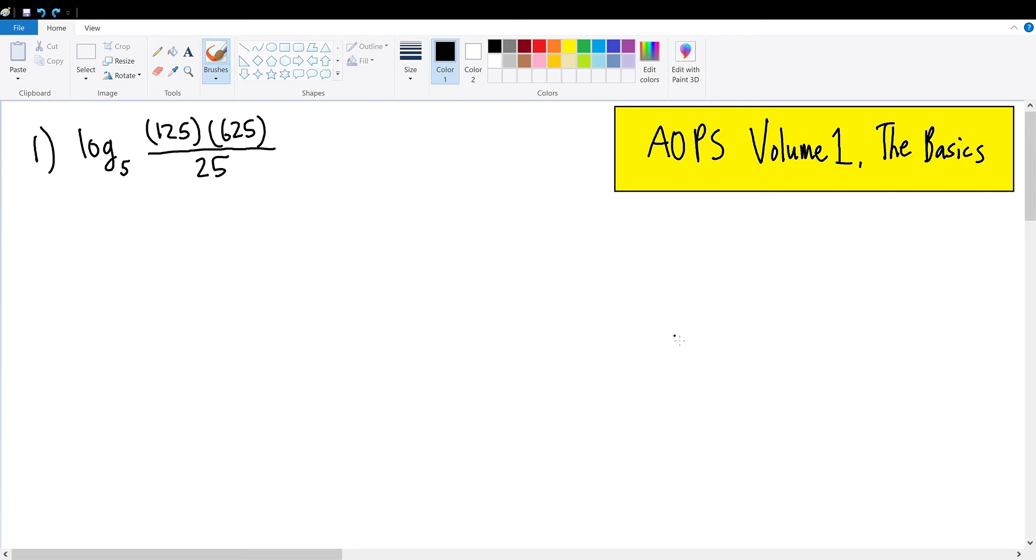A.O.P.S. Volume 1, The Basics. Number 1: log base 5 of 125 times 625 divided by 25.